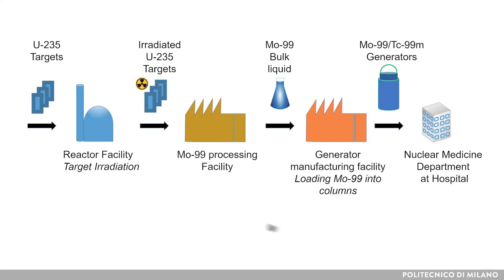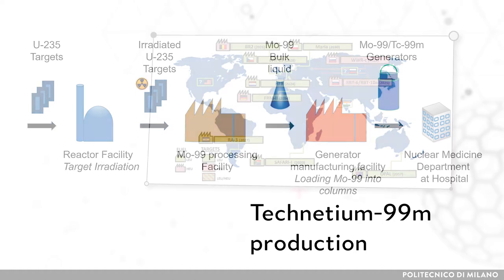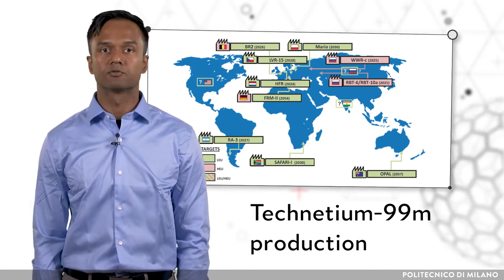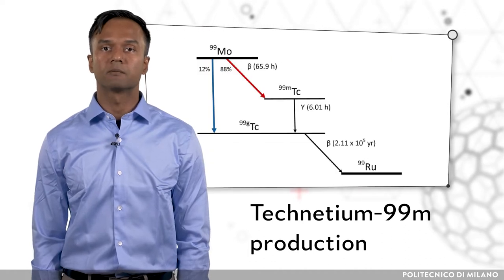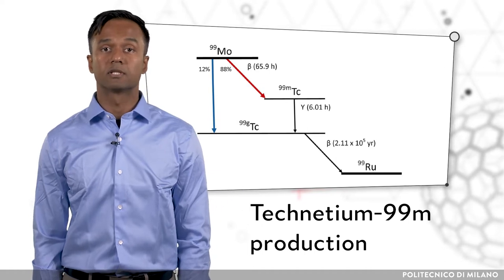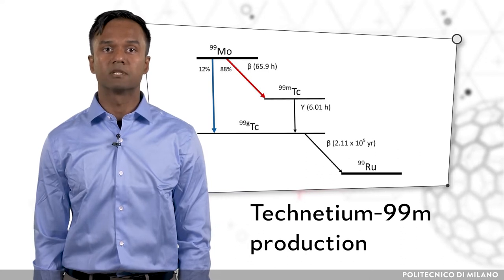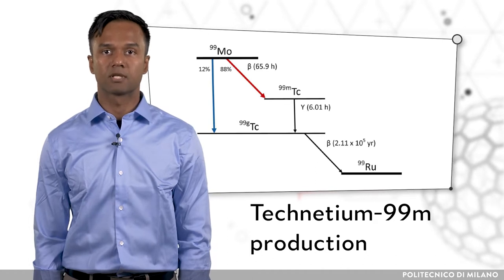One of the most important isotopes in nuclear medicine is technetium-99m — 80% of all diagnostic imaging requires this isotope. It is the daughter product of molybdenum-99, which is mainly produced in research reactors around the world. The majority of molybdenum-99 decays by emitting a beta particle to produce Tc-99m, which then decays to Tc-99g by emitting gamma rays, and further decays to stable ruthenium-99.